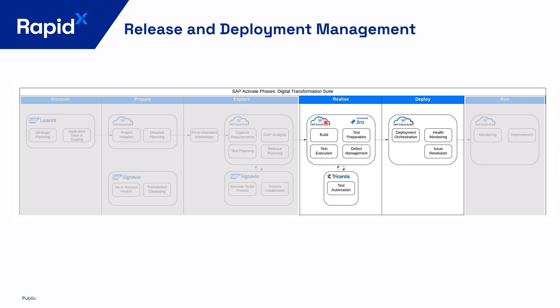I'm not going to cover the test phase in this demo — my colleague Jaco Brannan will be talking about Tricentis and test automation. When testing is done, we move to the Deploy phase where we engage the change manager, who is responsible to review all documentation and testing. Once they approve, the whole release is ready to go to production and we're ready for go-live.